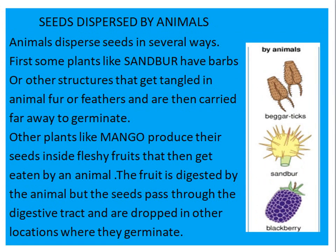Seeds dispersed by animals. Animals disperse seeds in several ways. First, some plants like sandbur have barbs or other structures that can get tangled in animal fur or feathers and are then carried far away to germinate. Other plants like mango produce their seeds inside fleshy fruits that get eaten by an animal. The fruit is digested by the animal but the seeds pass through the digestive tract and are dropped in other locations where they germinate.